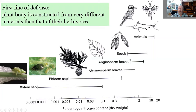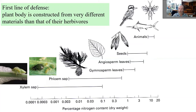Leaves and seeds have nitrogen content still an order of magnitude lower than animals need, but it's already at more manageable levels. When we look at how insects perform on different leaf qualities, we see that both water content and nitrogen content are important, and there is a positive correlation between them. The growth rate of caterpillars is optimal at a combination of high water content and high nitrogen content.